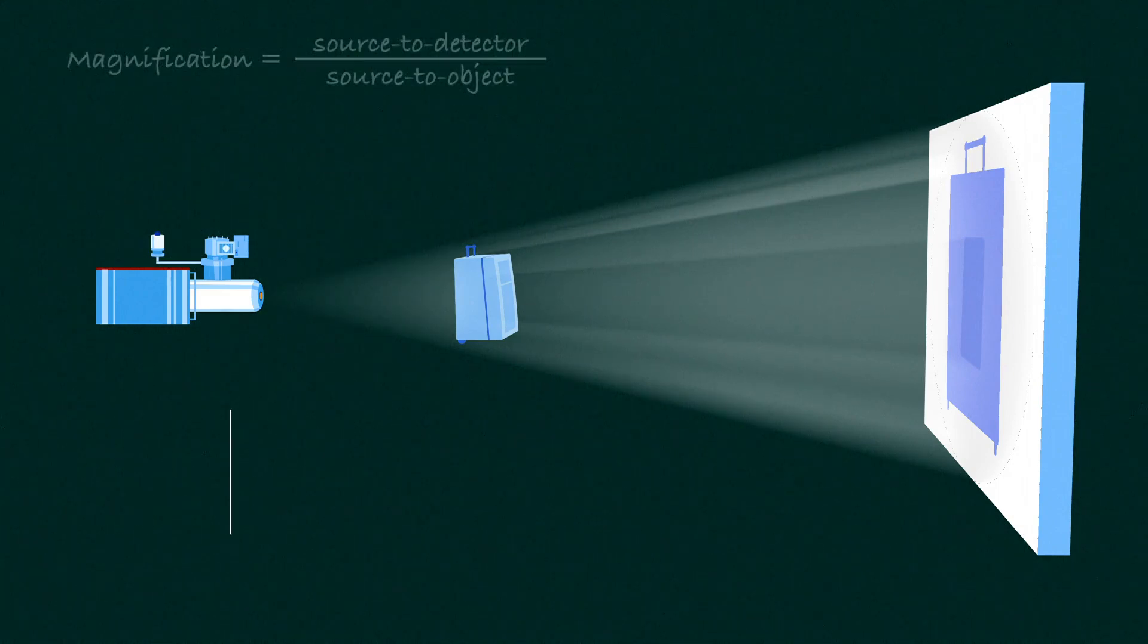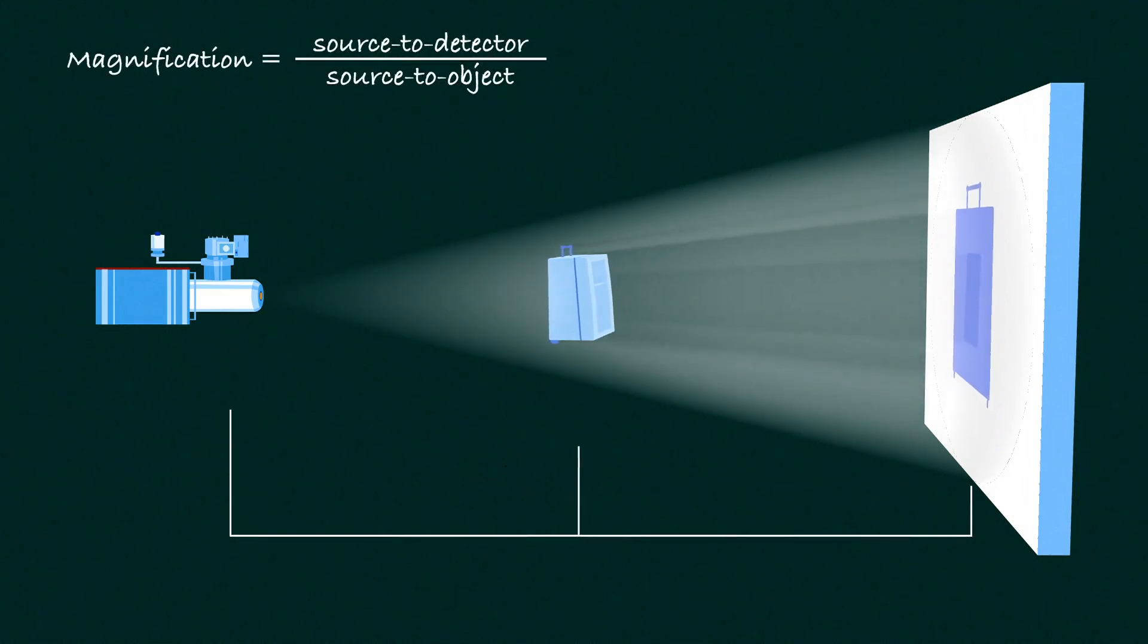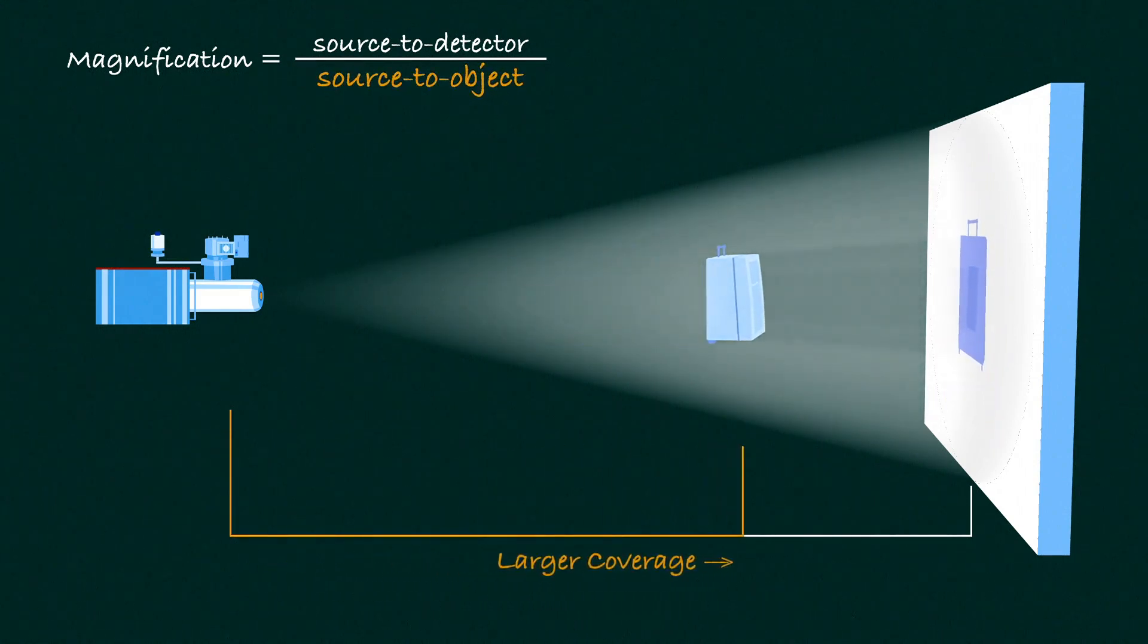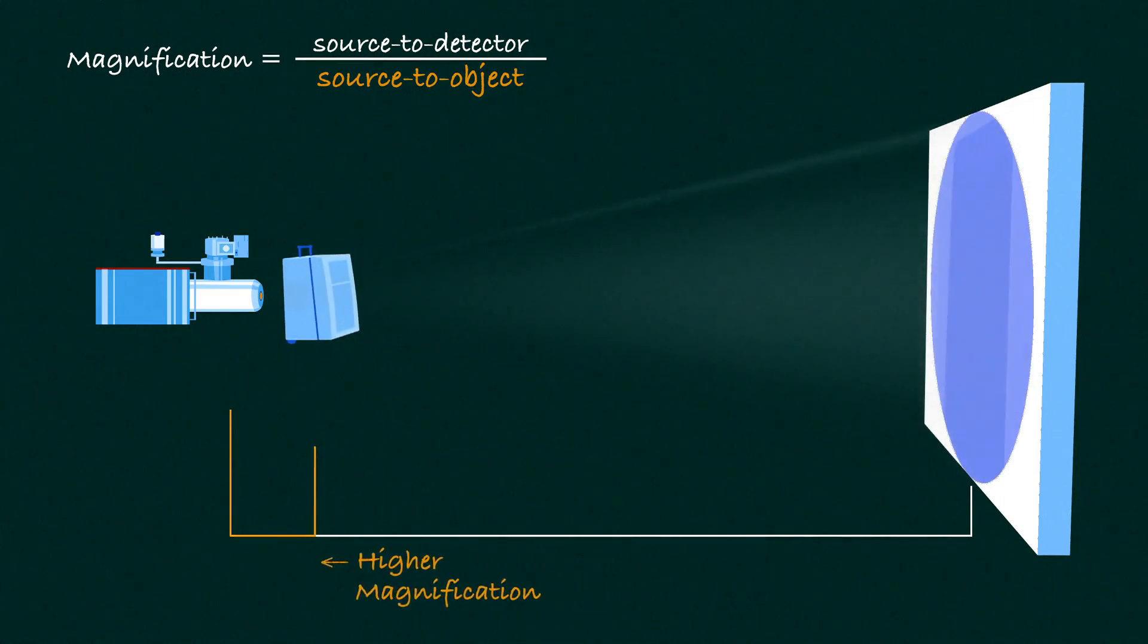With a point X-ray source, magnification and illuminated volume can be adjusted. Larger coverage is achieved by moving the object closer to the detector, while higher magnification is achieved by moving the object closer to the source.